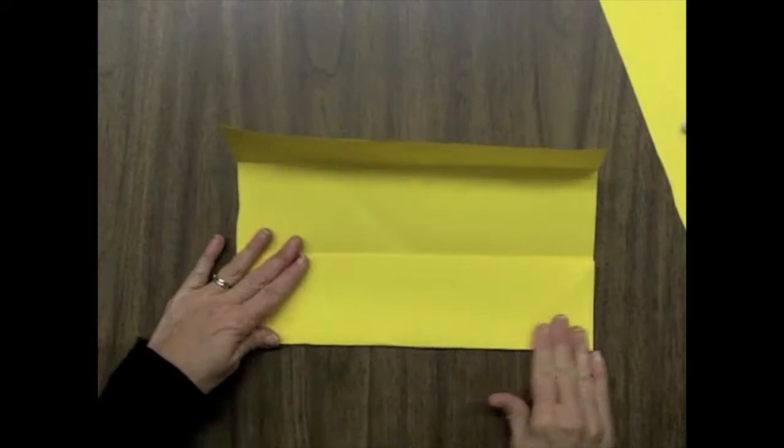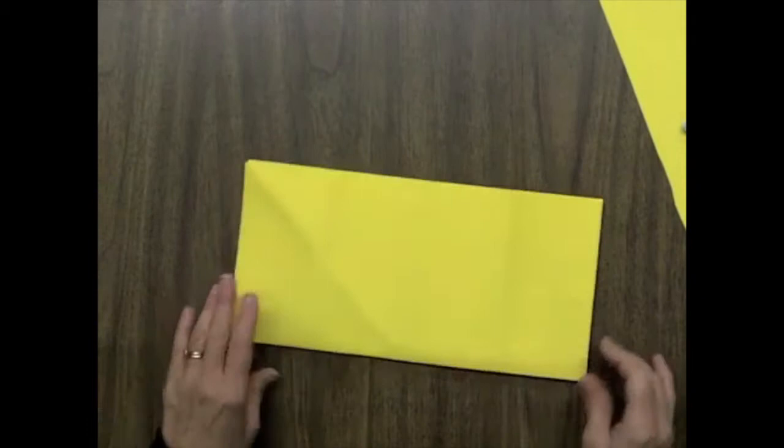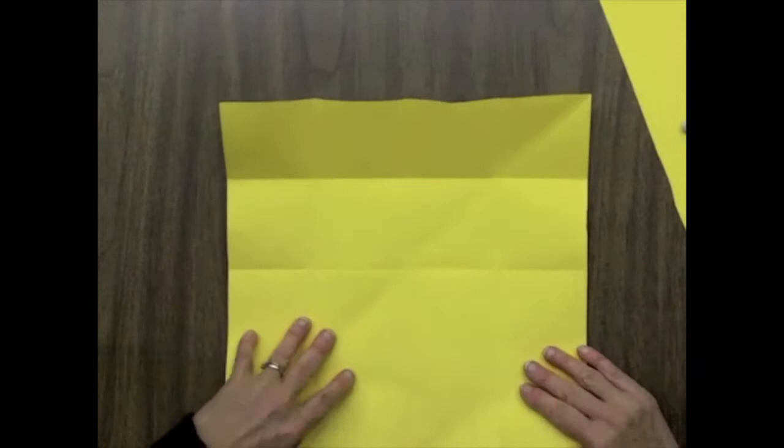Now we're turning it around the other way, and you're going to fold it in half this way. Crease it real good, and then open it. And fold in one end to that middle crease again. Crease it. And fold in the other edge to the middle crease, and crease it.